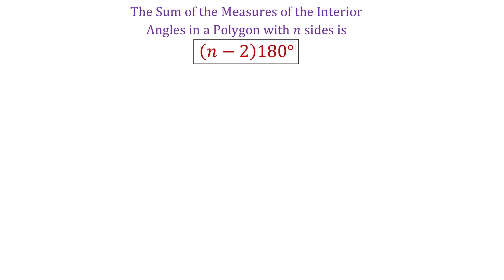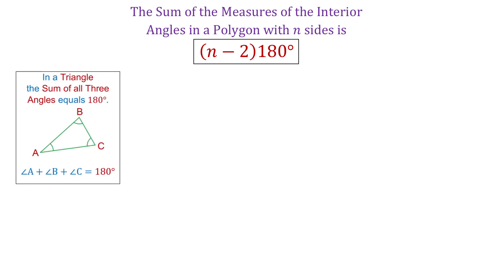Hello! Do you know why you use the formula n minus 2 times 180 degrees to find the sum of interior angles in a polygon of n sides? To understand this formula, first we need to know that in a triangle the sum of all three angles equals 180 degrees.